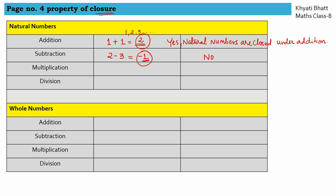Now let us check multiplication for natural numbers. 2 times 3 gives 6. Both 2 and 3 are natural numbers, and 6 is also a natural number, so yes, natural numbers are closed under multiplication. For division: 2 divided by 3 gives a fraction or decimal, which is not a natural number, so natural numbers are not closed under division.